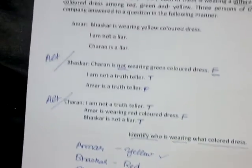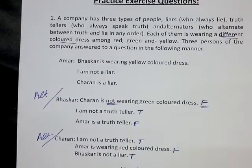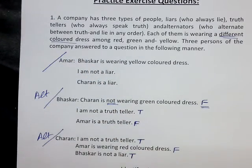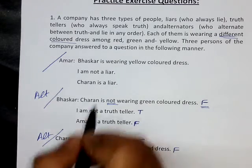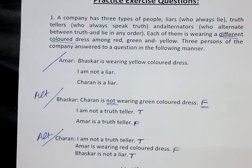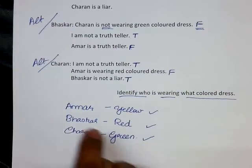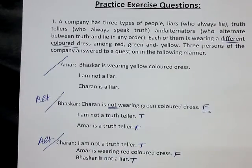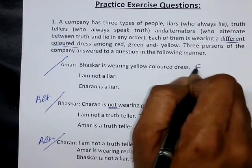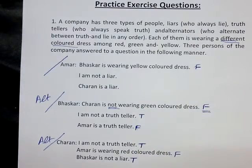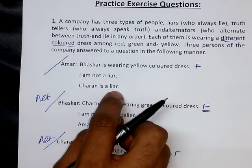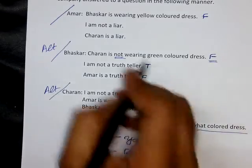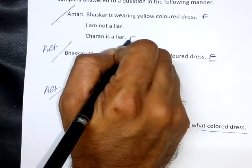The question was to identify who is wearing what colored dress — we have identified it. But the question is not complete; we need to check whether there is any conflict or logical contradiction. Amar says 'Bhaskar is wearing yellow colored dress,' which is false since Bhaskar wears red. Amar also says 'Charan is a liar' — we can see that Charan is an alternator, so 'Charan is a liar' is also false.